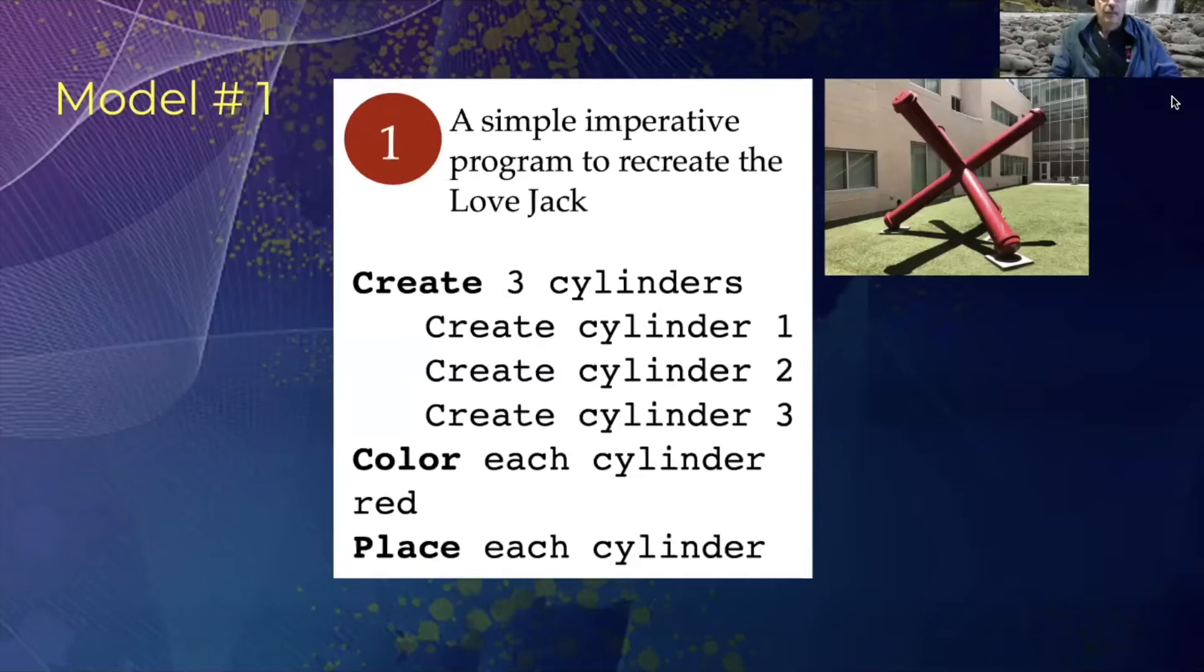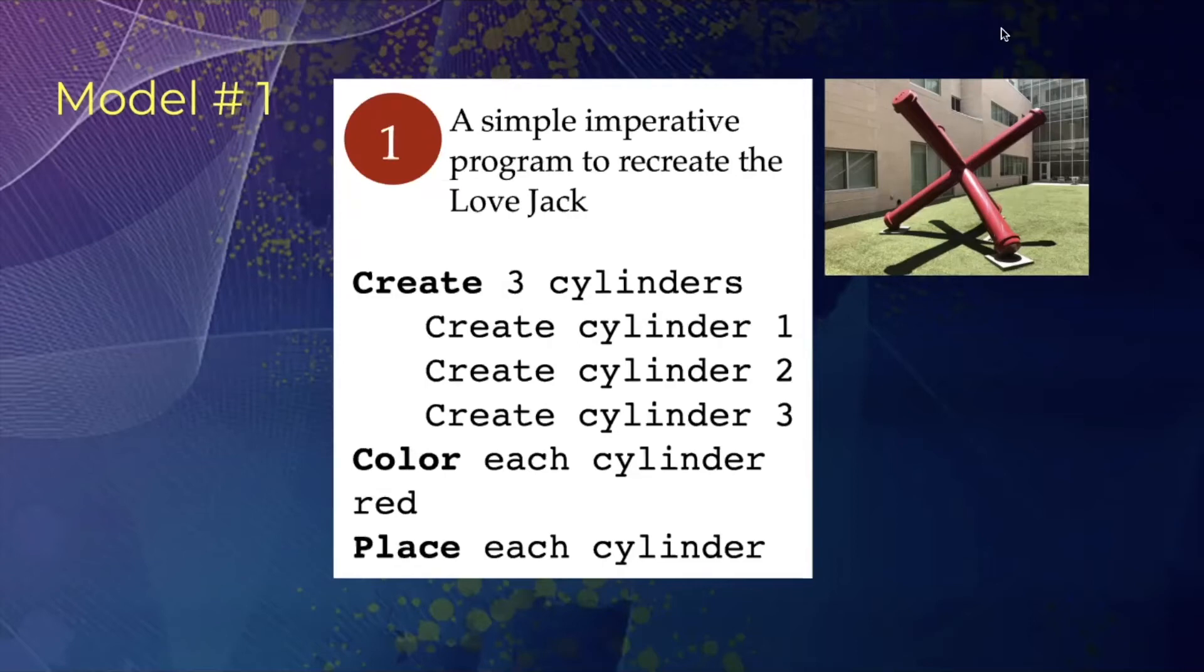So one way to interpret it is that you've got a program. You create three cylinders. So you can imagine these being three cylinders on the right side. I'm showing the love jack for reference on the right. You create cylinder one, two, and three, you color each cylinder red, and you place each cylinder. So I think we've all seen these sorts of instructions and lists.